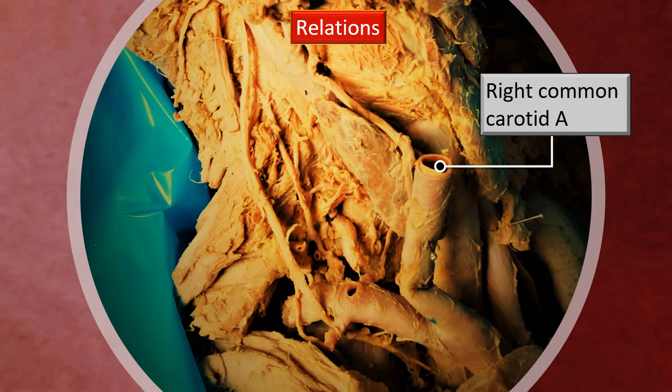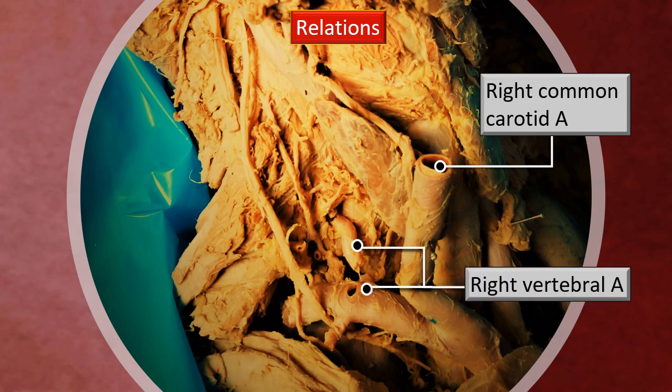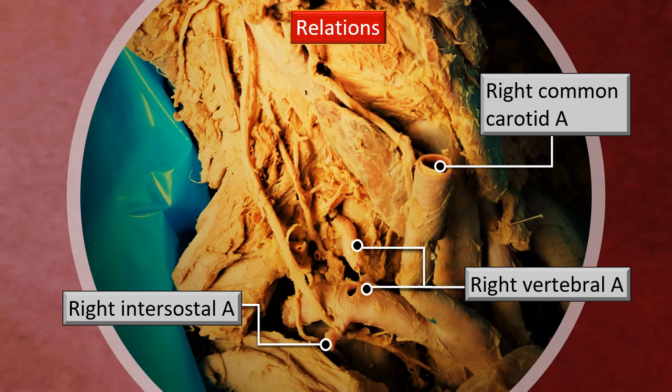This is the right anterolateral view. You can see the cut section of the right common carotid artery. When you dissect out the branches of the inferior thyroid on a deeper plane, you are likely to encounter another important blood vessel, namely the vertebral artery — cut here at its origin from the subclavian. That's the right vertebral artery. Incidentally, also visible but with no direct relation to the thyroid gland is the right intercostal artery.